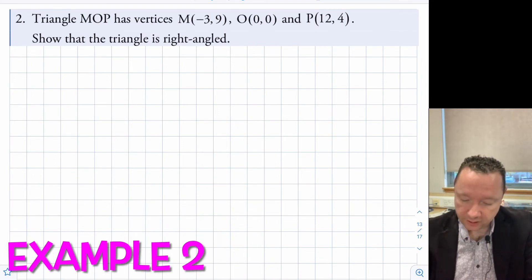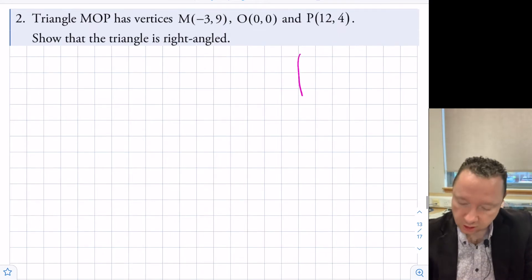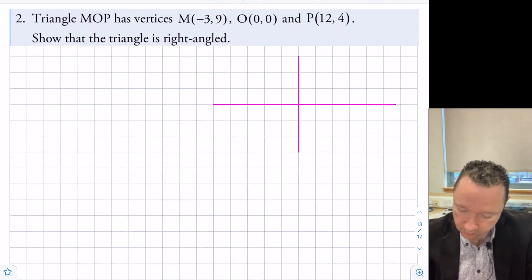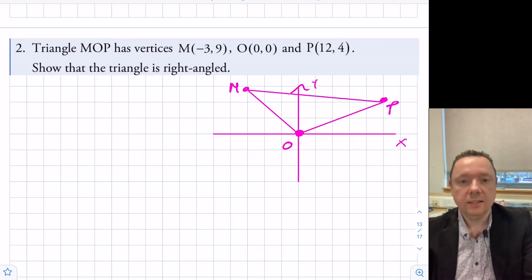Question two says, triangle MOP has vertices M(-3, 9), O(0, 0) and P(12, 4). Show that the triangle is right-angled. So we could draw a kind of picture of this, just as a kind of rough sketch at the side. Nowhere near accurate, but -3, 9 would be up here somewhere, so call that M. There's 0, 0, and 12, along 12 and up 4, maybe somewhere around about here. So there's your O and there's your P. We can see here you end up with a triangle. We're not sure if it's right-angled or not until we prove it. Now to prove it, we just need to check the gradients of each bits and see if any two make a right angle. We would hope it's going to be MO and OP.